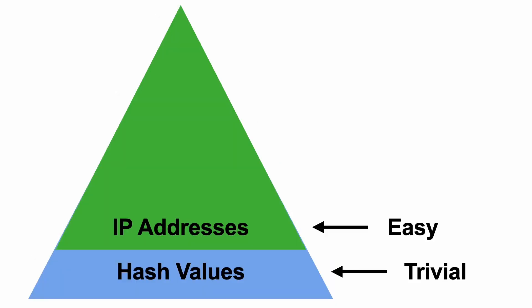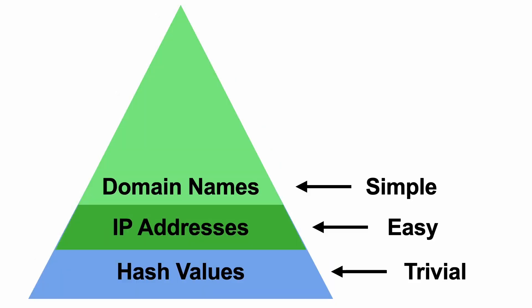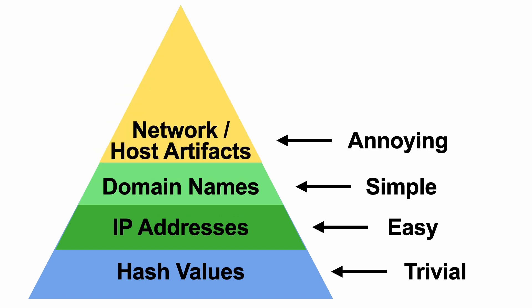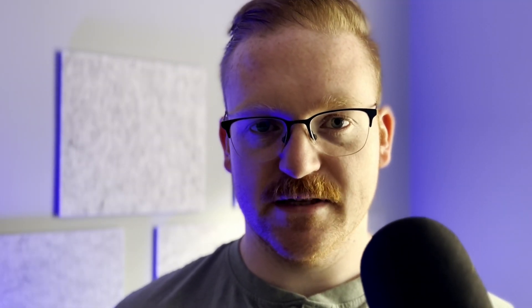The pyramid of pain consists of six different layers: hash values, IP addresses, domain names, network and host artifacts, tools, and TTPs — or tactics, techniques, and procedures. So let's start from the bottom and work our way up to the top.